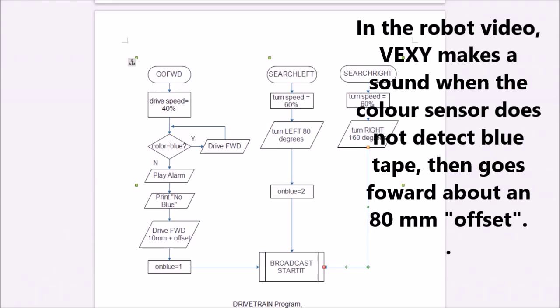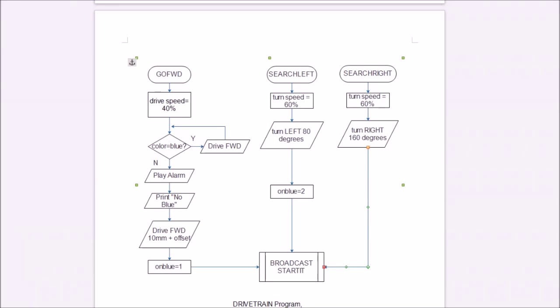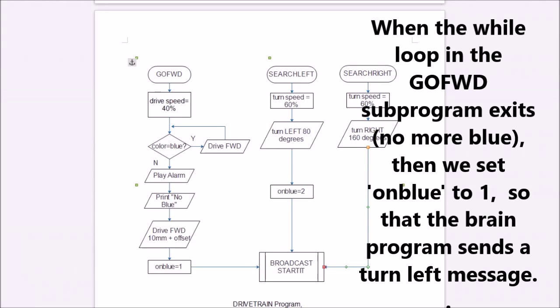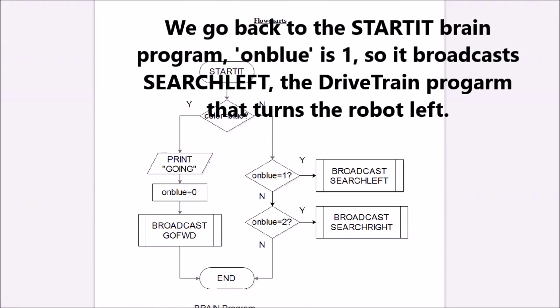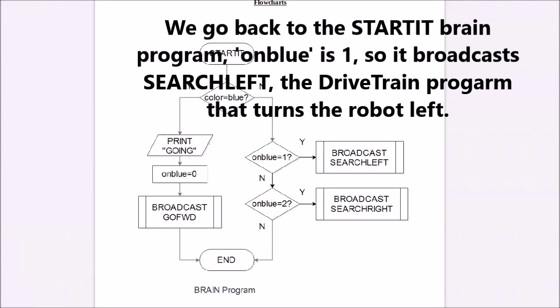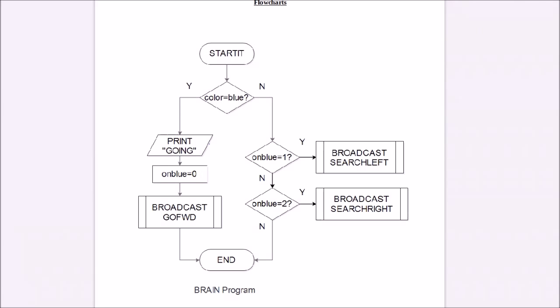Then after I finish, I set on blue equals one, which means I want the robot to turn left first. So the way we've written the program is the robot always turns left when it doesn't detect blue. It's got to turn somewhere. So on blue is one and then it says broadcast started. Well that means we go back to our brain program, go forward program, set on blue one. And yes, it is one, so you'll broadcast search left.